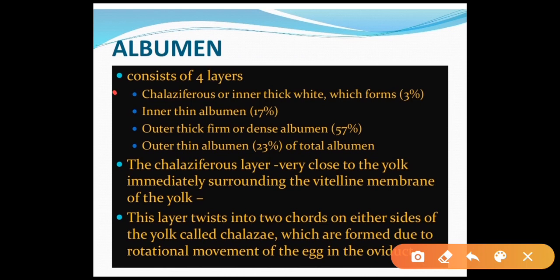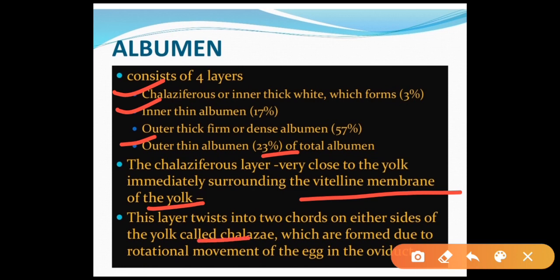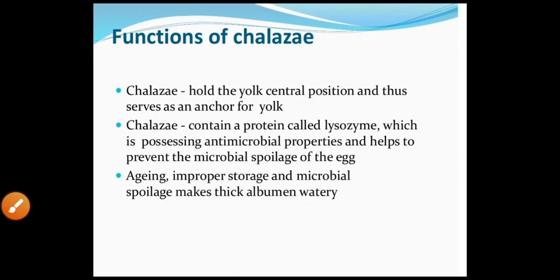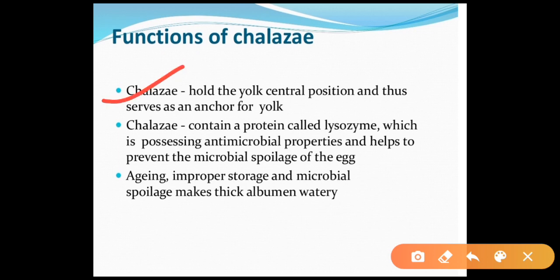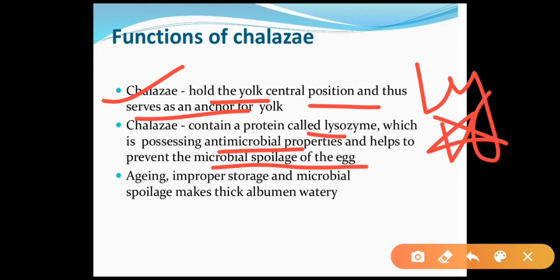Albumin consists of four layers: chalaziferous or inner thick layer (about 3%), inner thin albumin (about 17%), outer thick firm or dense albumin (about 57%), and outer thin albumin (about 23%). The chalaziferous layer is close to the yolk, surrounding the vitelline membrane. This layer twists into two cords on either side of the yolk called chalazae, formed due to rotational movement of the egg in the oviduct. The chalazae hold the yolk in a central position and serve as an anchor. Chalazae contain a protein called lysozyme, which has antimicrobial properties and helps prevent microbial spoilage of the egg.